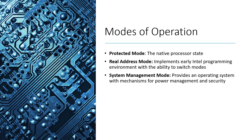Real address mode is something that was implemented with early Intel programming environments, so some of the earlier x86 chips were using real addressing mode. The main idea with real addressing mode is that it allows you to directly access hardware components, which is really useful if you're going to be working at a hardware level and interacting with hardware devices. However, it's not something we do by default — we typically stay in protected mode unless we need that operation, in which case we can switch into real address mode.